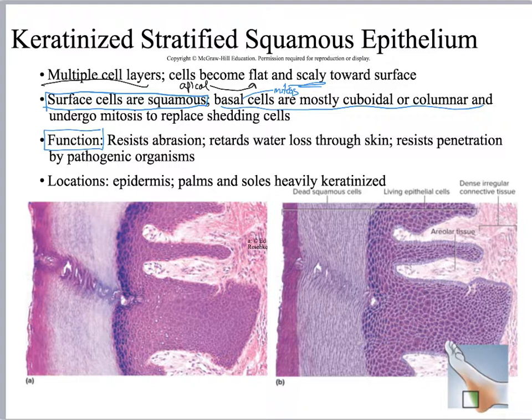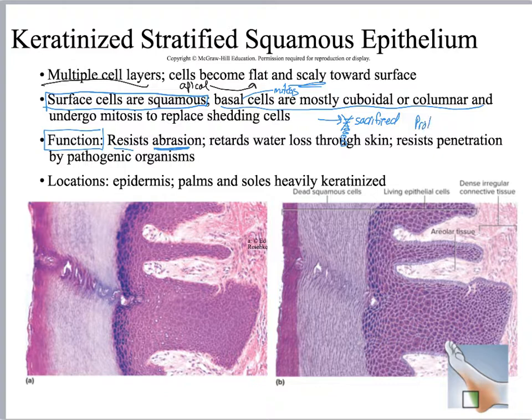Structure and function go together. This tissue has lots and lots of rows of cells, and because it has rows of cells, the cells up at the surface can be sacrificed. You use this type of tissue in an area where you have a lot of abrasion, so that if you lose the surface cells you don't start bleeding and die. It protects you by resisting abrasion, so that when you lose a few layers of cells you don't start bleeding and die.